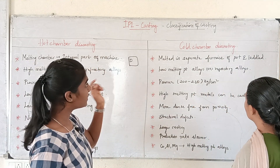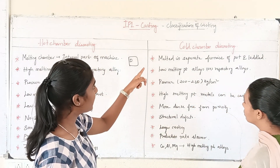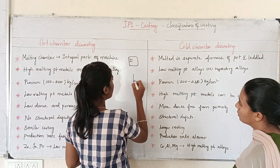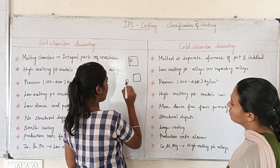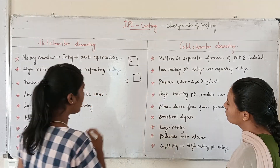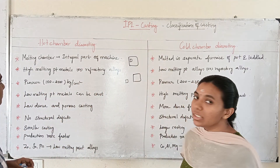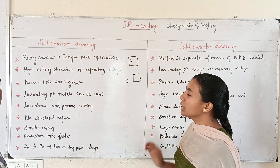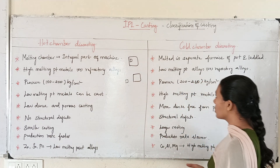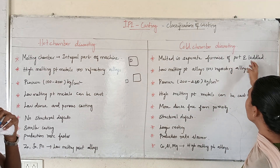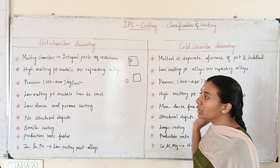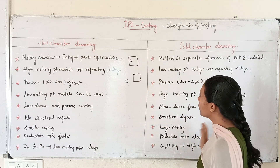In cold chamber die casting, the metal is melted in a separate furnace or pot. The melting chamber is not part of the machine itself — that is the key difference between the two.